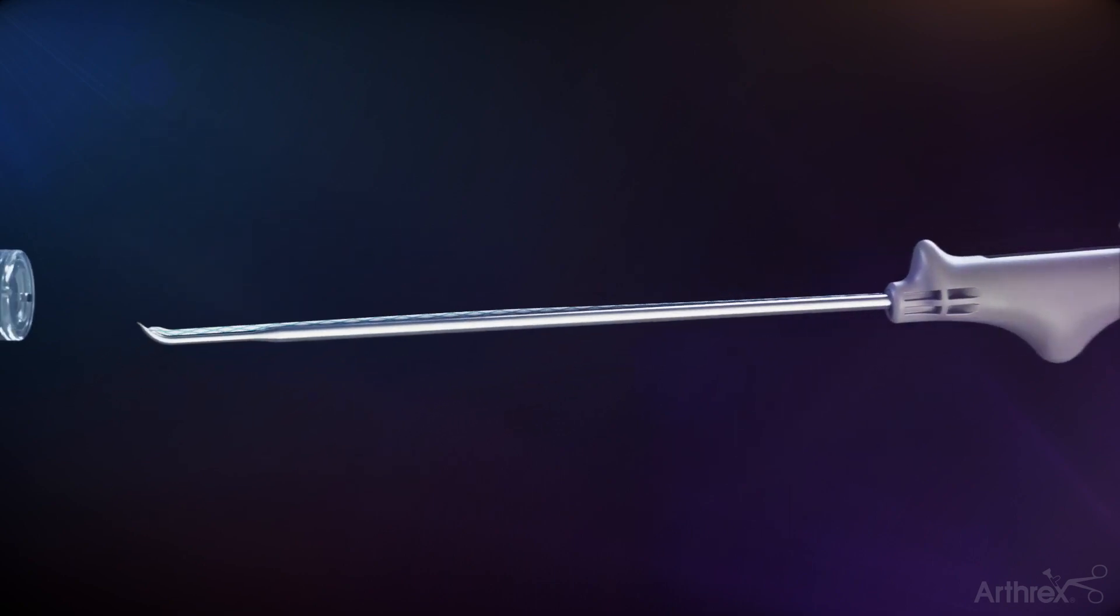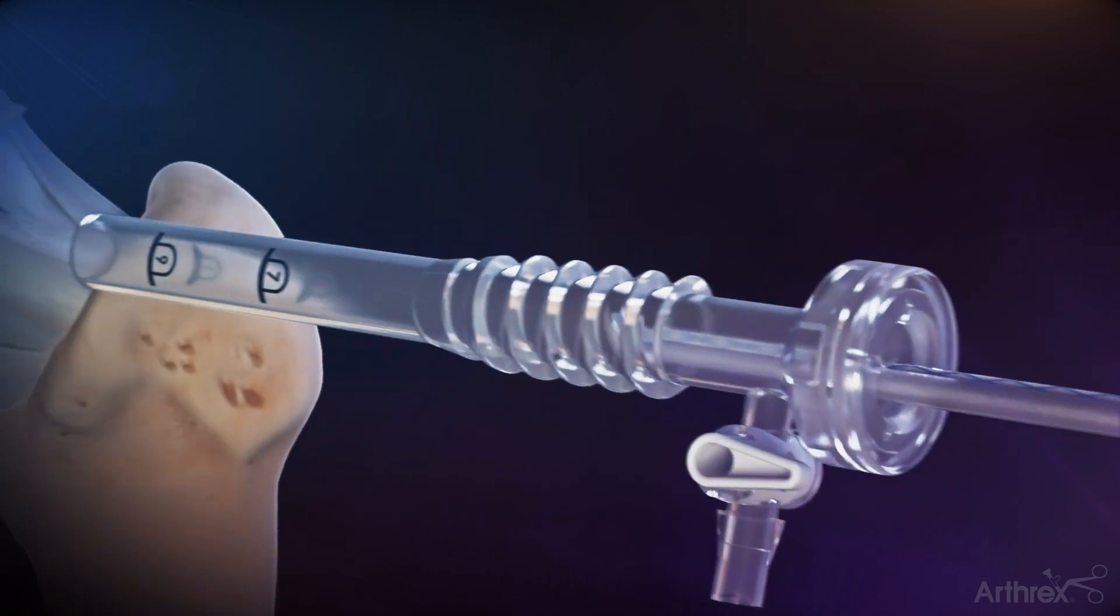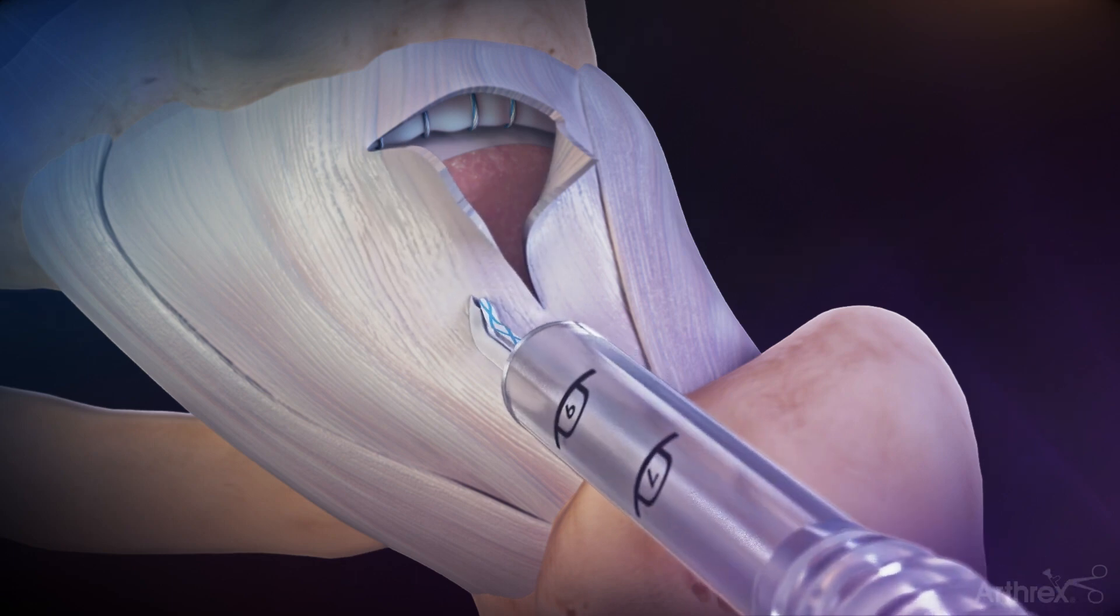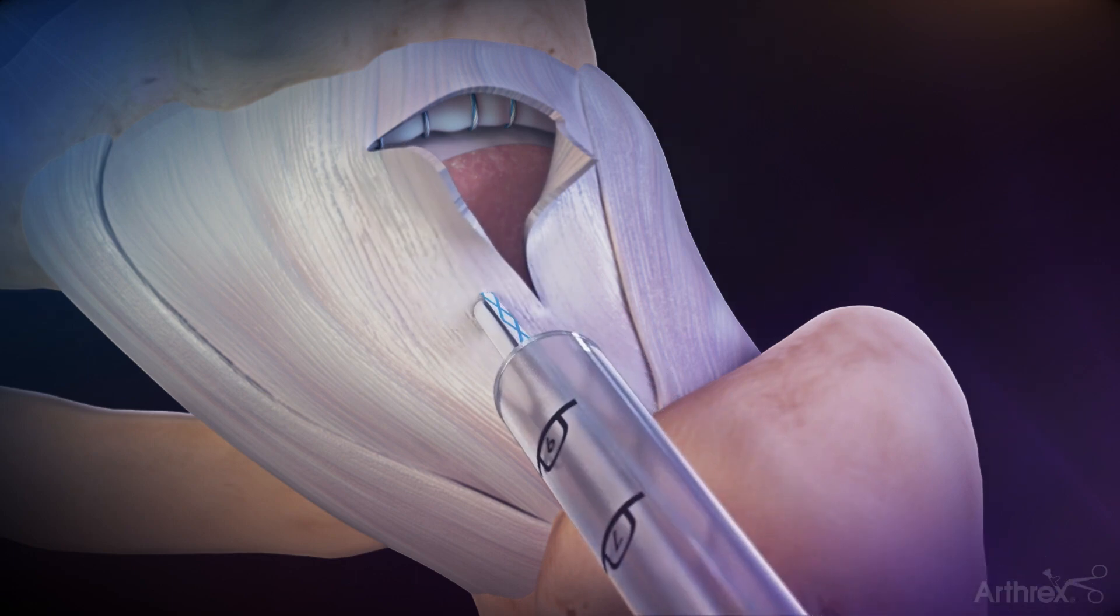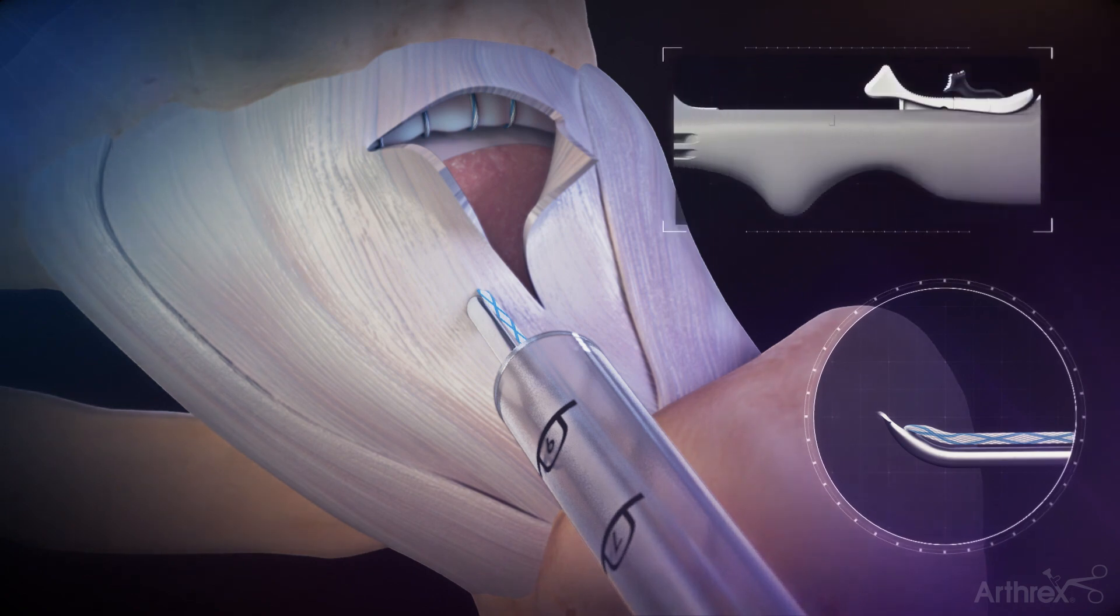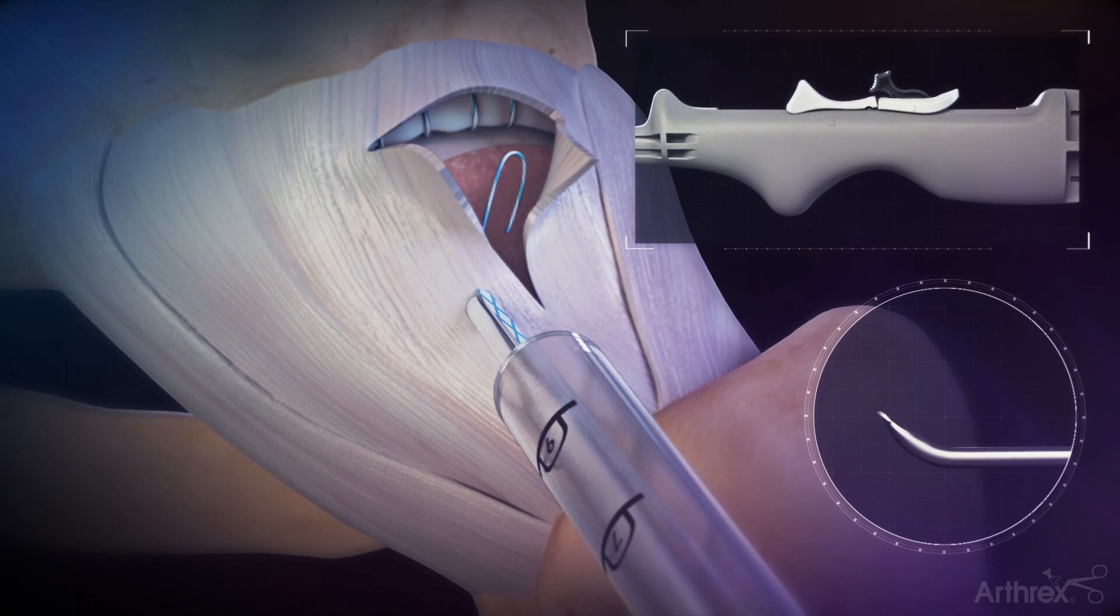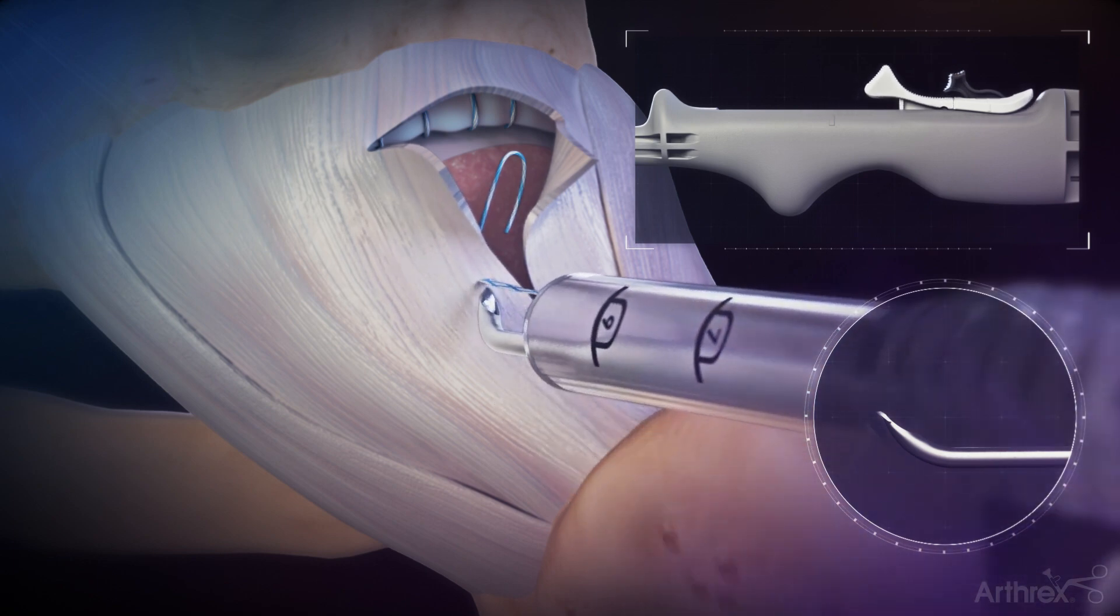Place the capsule stitch suture passer through the distal anterior lateral accessory portal to pass suture through the most distal medial aspect of the T capsulotomy. Push the suture underneath the capsule and into the peripheral space by pushing the white sliding actuator down and forward. Once the suture is released from the jaws, push down and pull the white sliding actuator backward so it's loaded back into the needle.